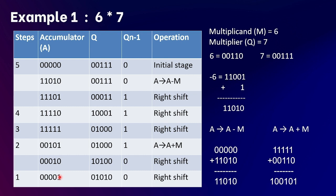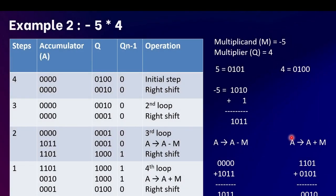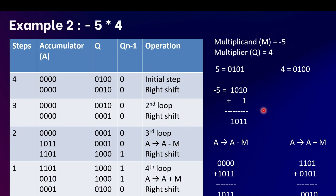Now moving to the second example: minus 5 multiplied by 4. Here the multiplicand is minus 5 and the multiplier is 4. The binary form of 5 is 0101 and 4 is 0100. To convert minus 5 to binary, we take the one's complement of 0101 which is 1010, then add 1 to get 1011. Since each number contains 4 bits, there will be 4 counts in Booth's algorithm.